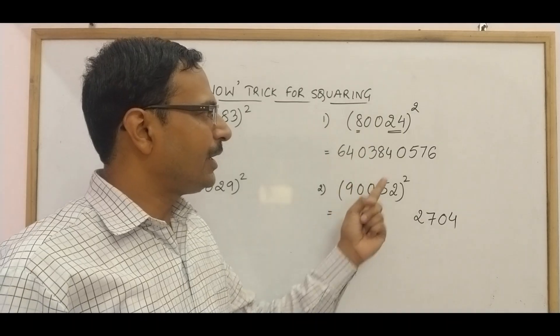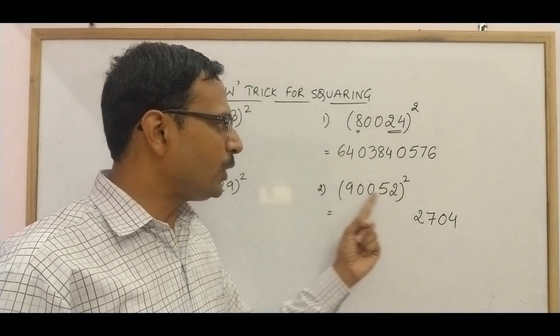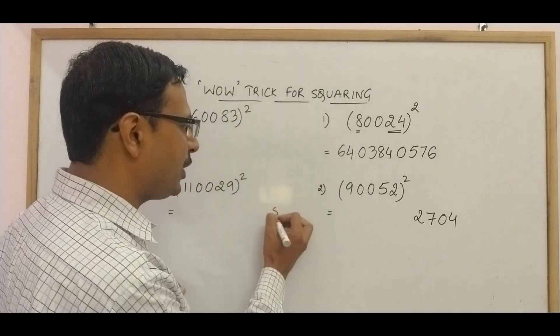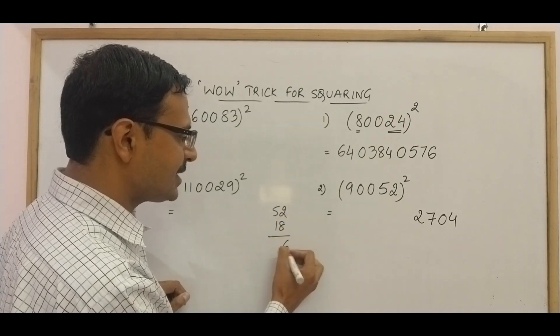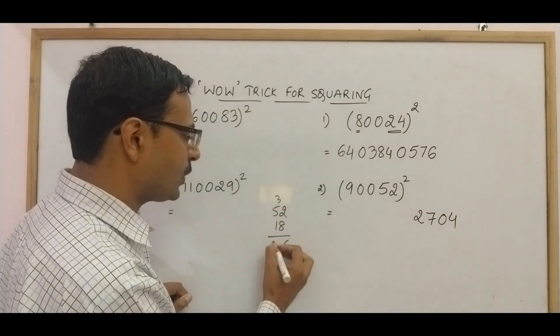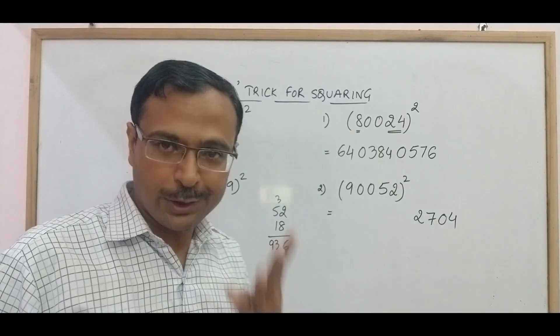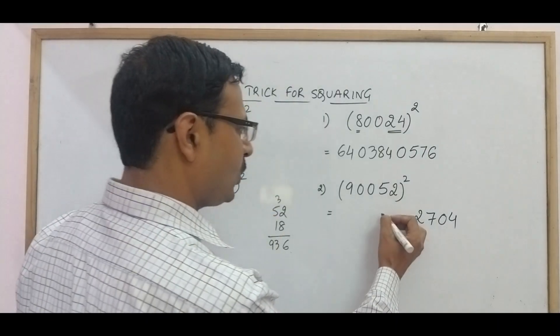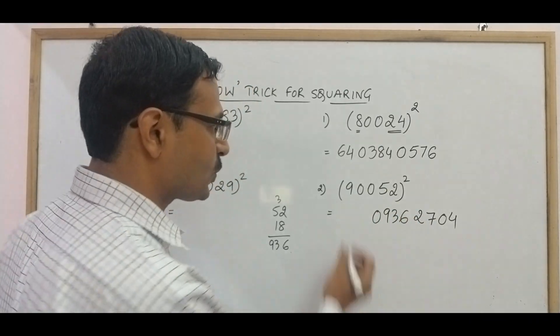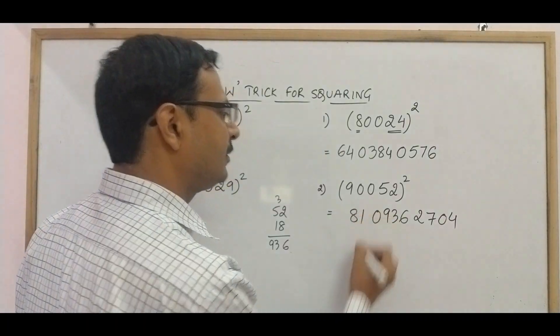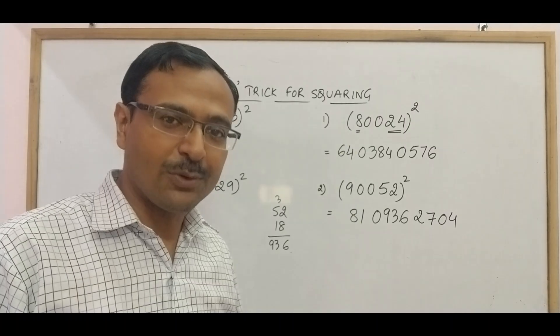Now what about the middle digits? I told you 24 into 8 into 2. 52 into 9 into 2, so 52 into, 9 to the 18, now 18 to the 36, 18 to the 90, so 936. Now I have a three digit number 936 but I wanted four digits right? So 0, 9, 3, 6 and finally the square of 9 which is 81 and here is your answer 8109362704.